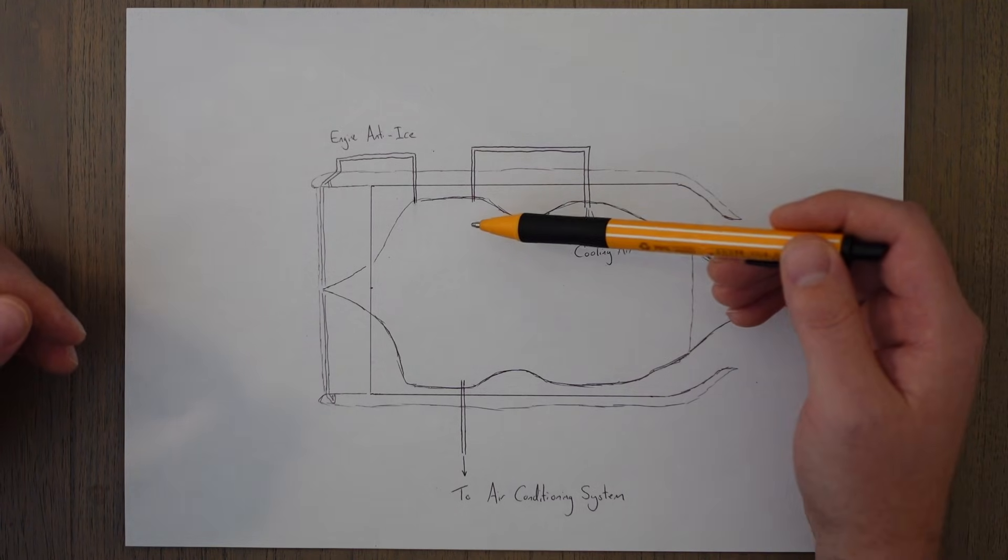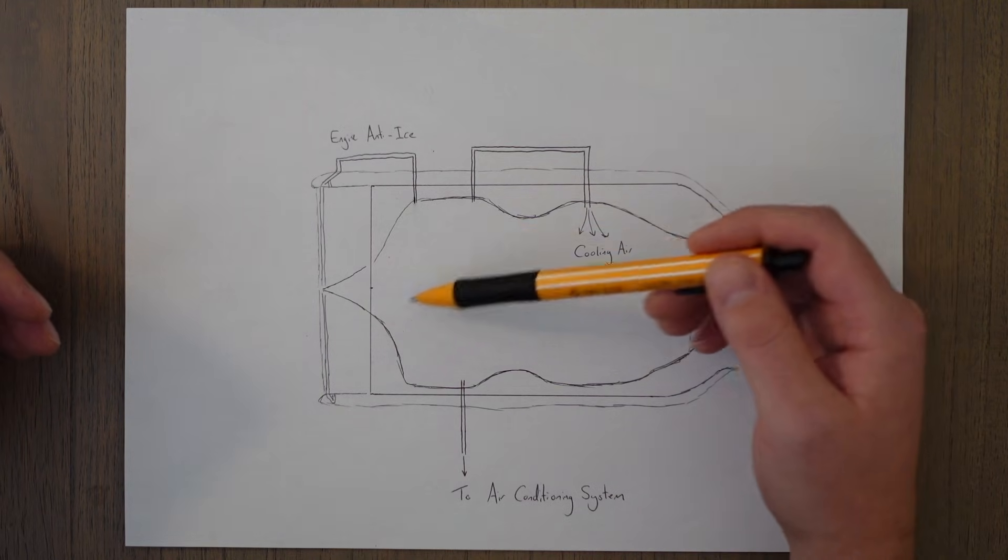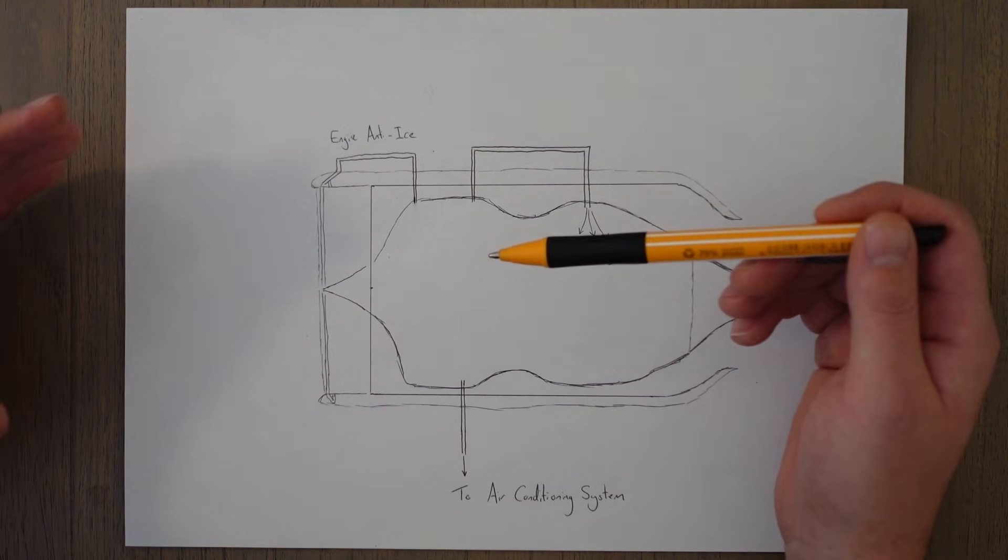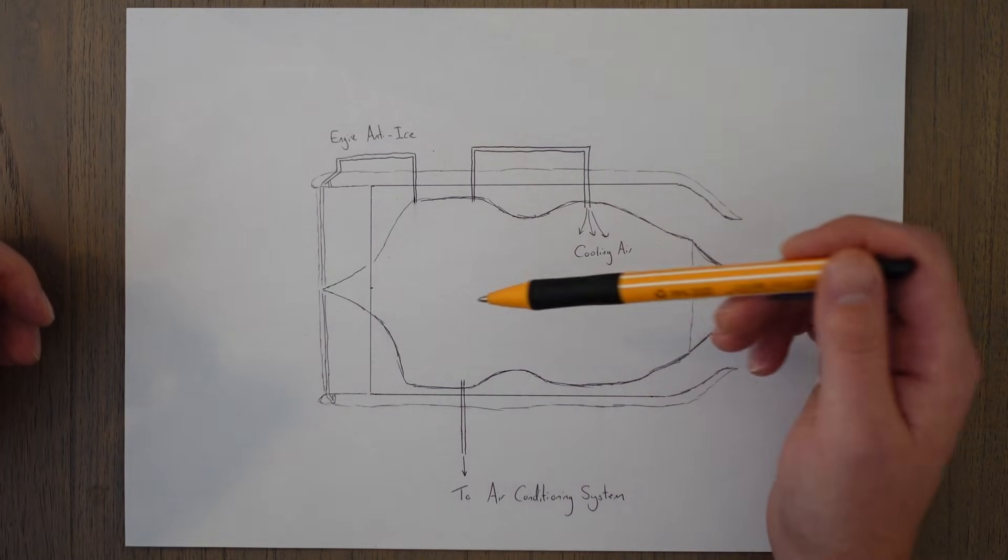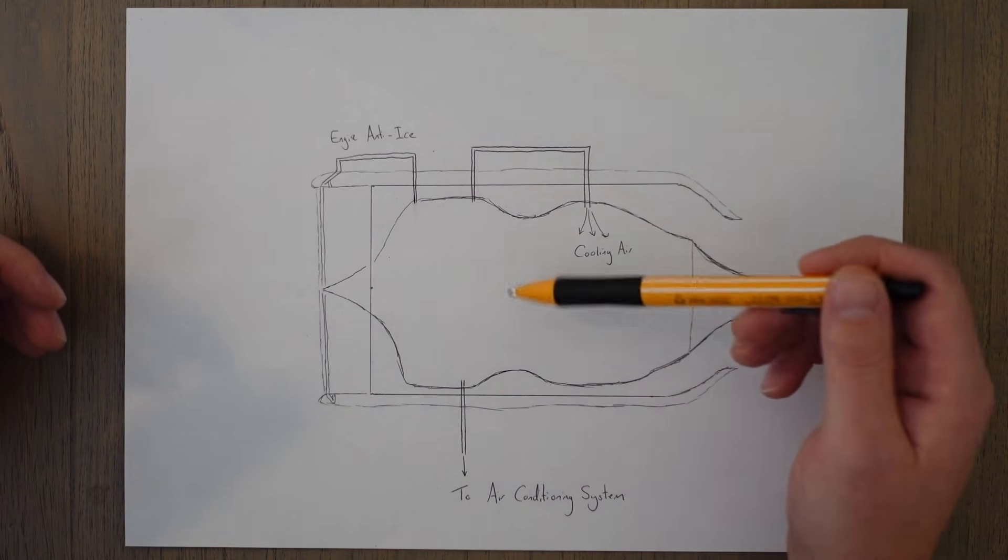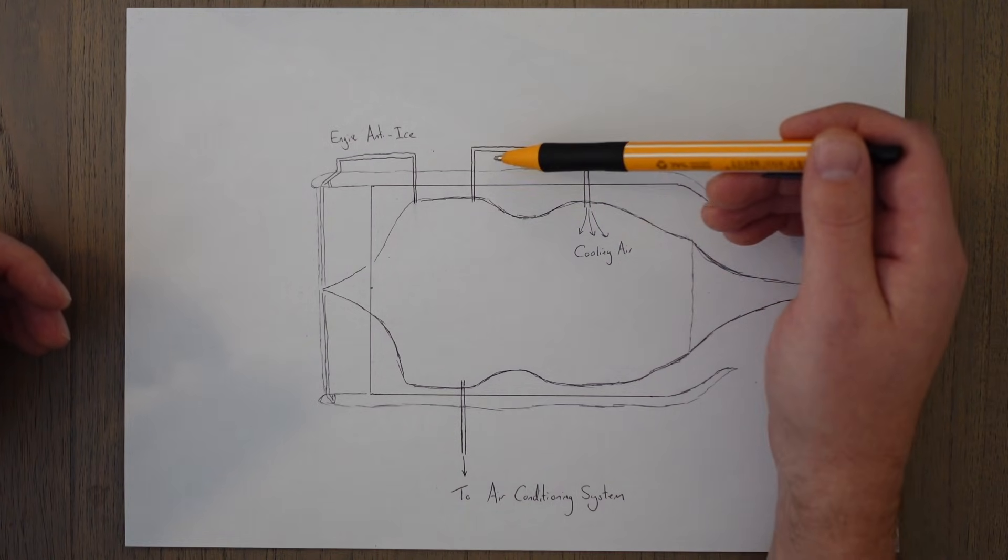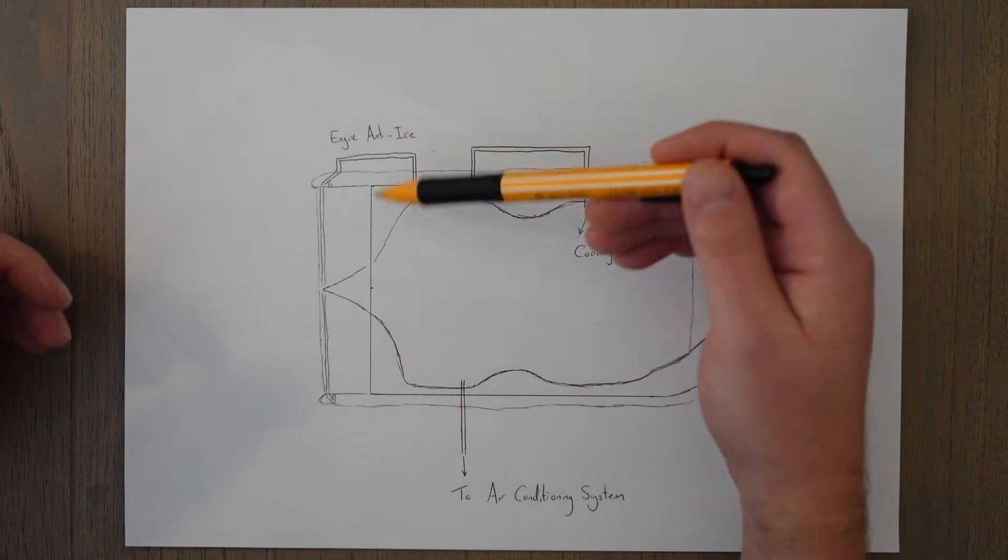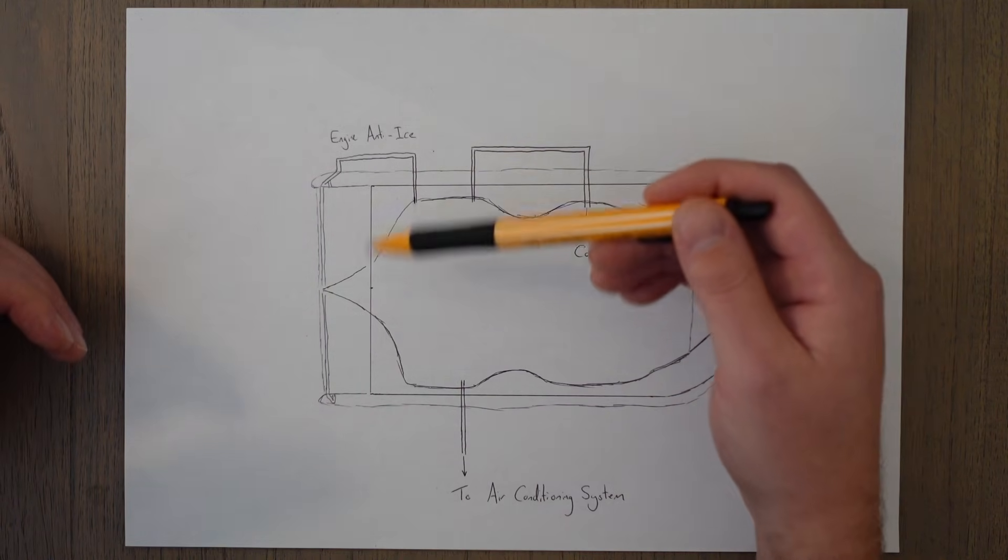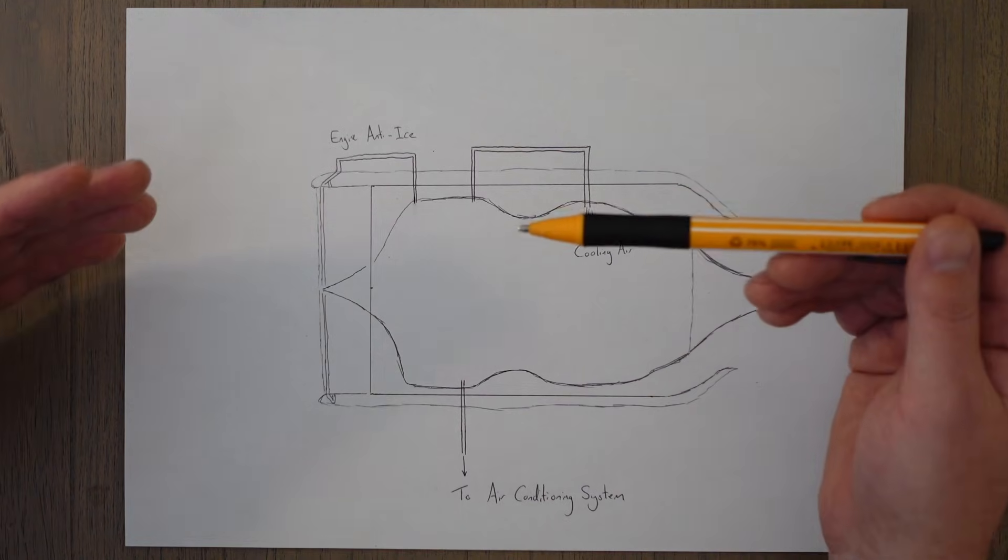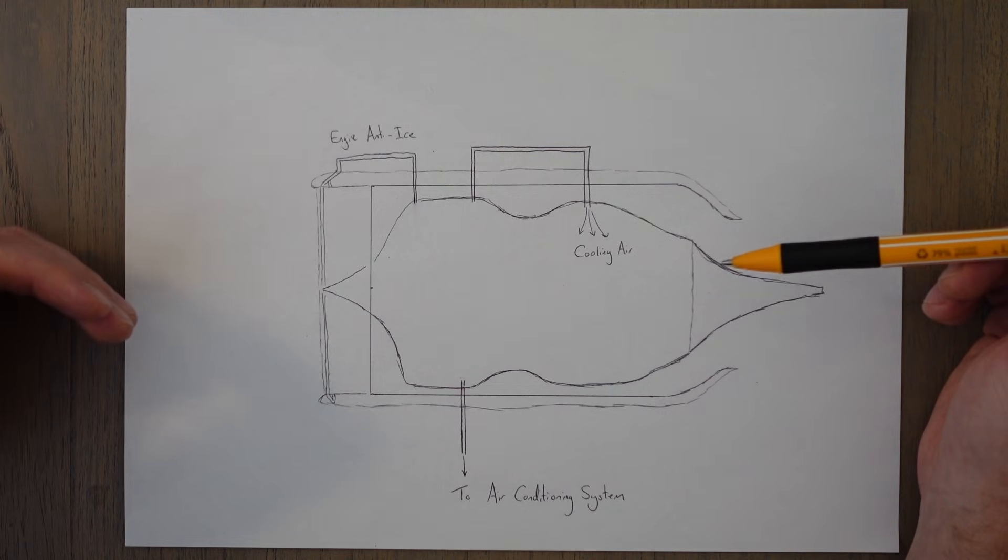One of the main functions of the bleed system is to provide an anti-icing function. The intake of the engine needs to be kept clear of ice. This is so we can ensure a nice smooth laminar flow of air through the intake towards the compressor. So we take some of that hot air inside of the compressor and redirect it around the intake of the engine via internal tubes and pipes, and this heats up the surface and prevents any ice from forming.